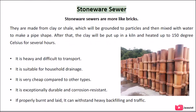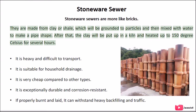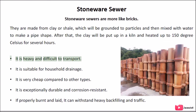Stoneware Sewer: Stoneware sewers are more like bricks. They are made from clay or shale, which is ground to particles and then mixed with water to form a pipe shape. After that, the clay is put in a kiln and heated up to 1150 degrees Celsius for several hours. It is heavy and difficult to transport. It is suitable for household drainage and is very cheap compared to other types. It is exceptionally durable and corrosion resistant. If properly burnt and laid, it can withstand heavy backfilling and traffic.